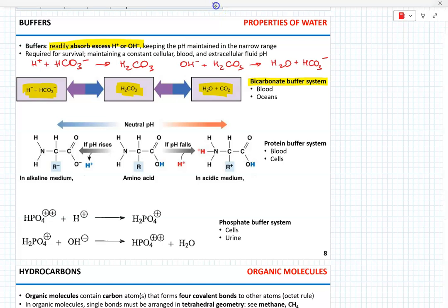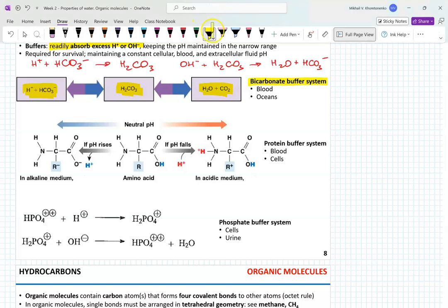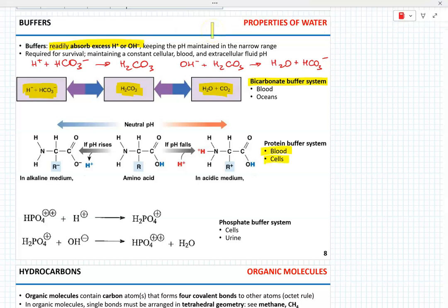The protein buffer system is essential for buffering intracellular fluid and blood. The NH₂ amino groups can absorb hydrogen if acid is added, forming NH₃⁺. If pH rises and hydroxide anion is added, hydrogen is required — hydrogen can be donated by the carboxyl group COOH.